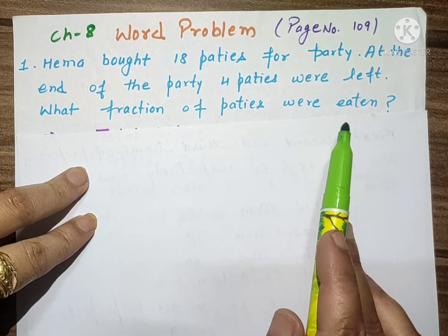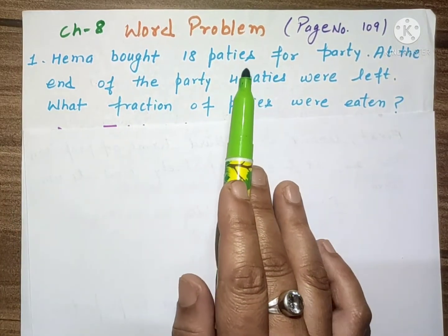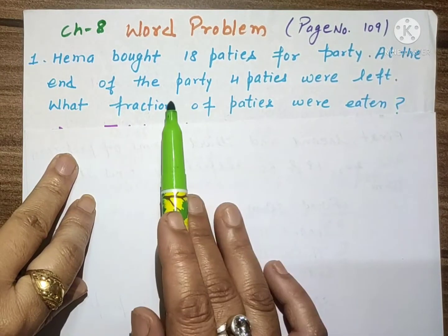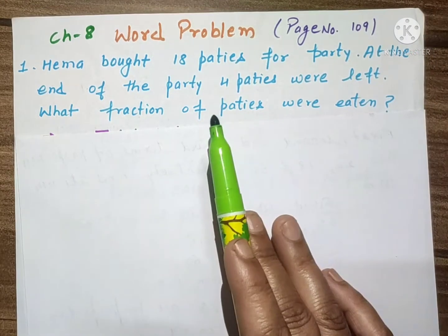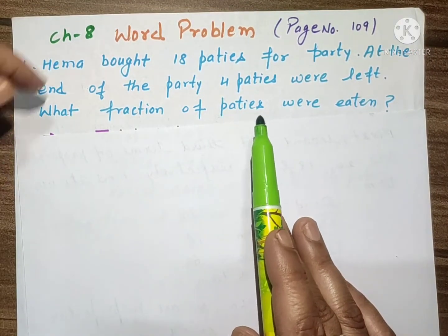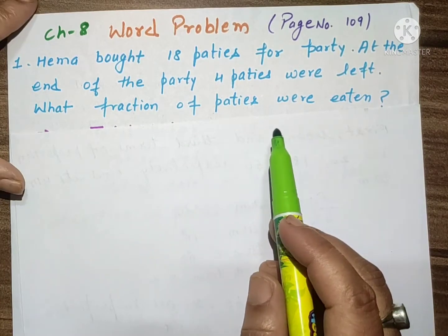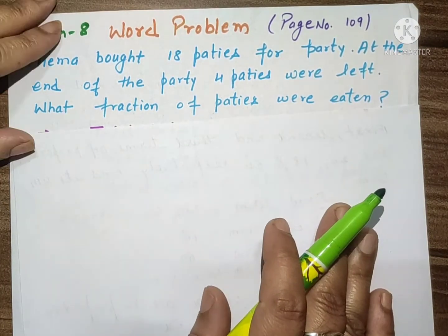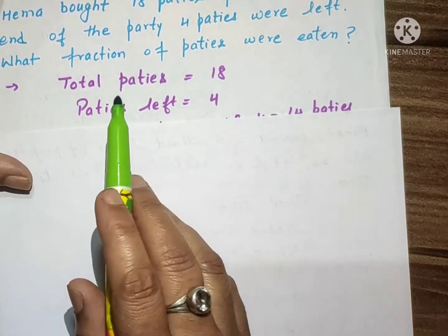What fraction of patties were eaten? Hema party ke liye 18 patties lekar ai, us mein se party jab khatm hui toh four patties bachi. Toh humne batana hai what fraction of patties were eaten - ki is party mein patties khai gai woh kis fraction mein thi. So let us start solving this question.